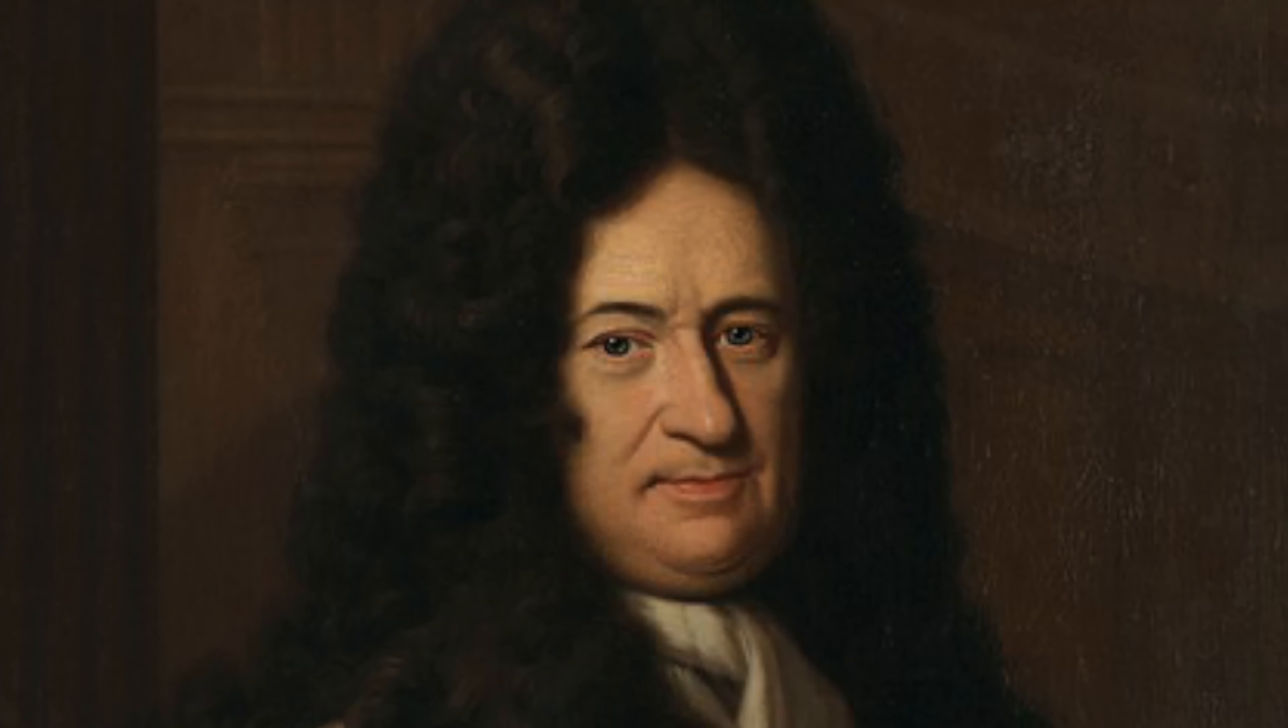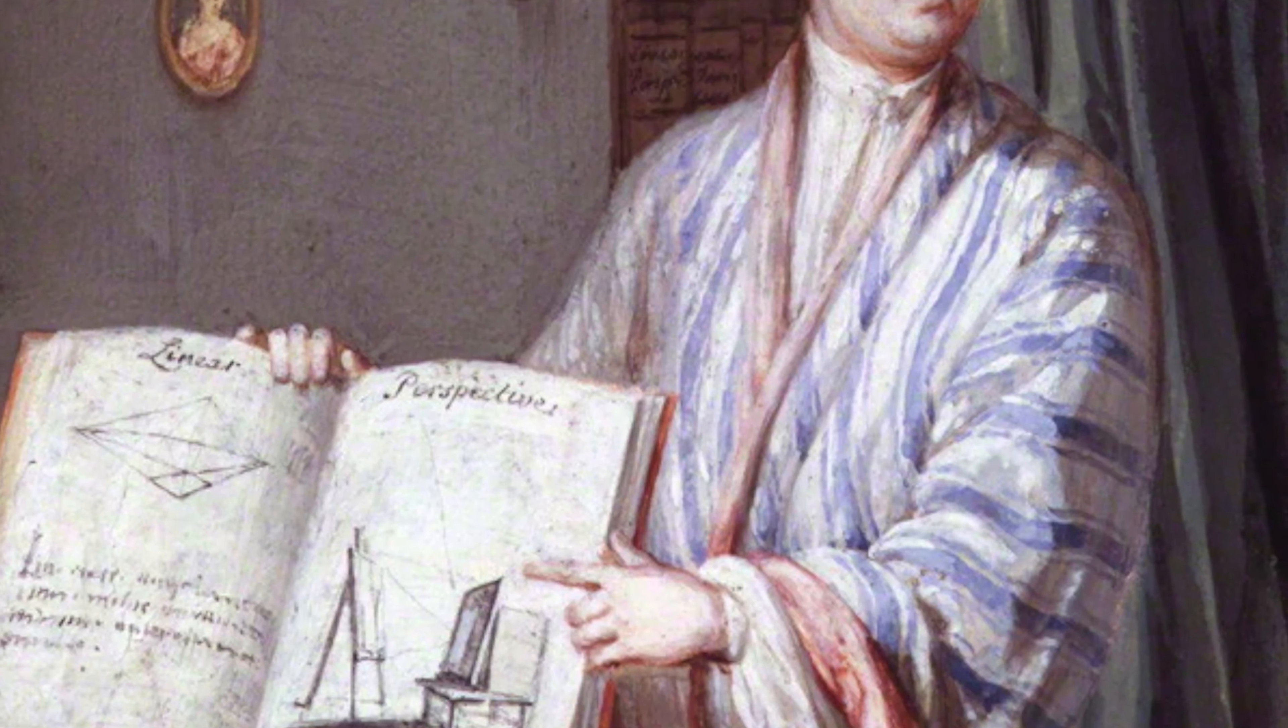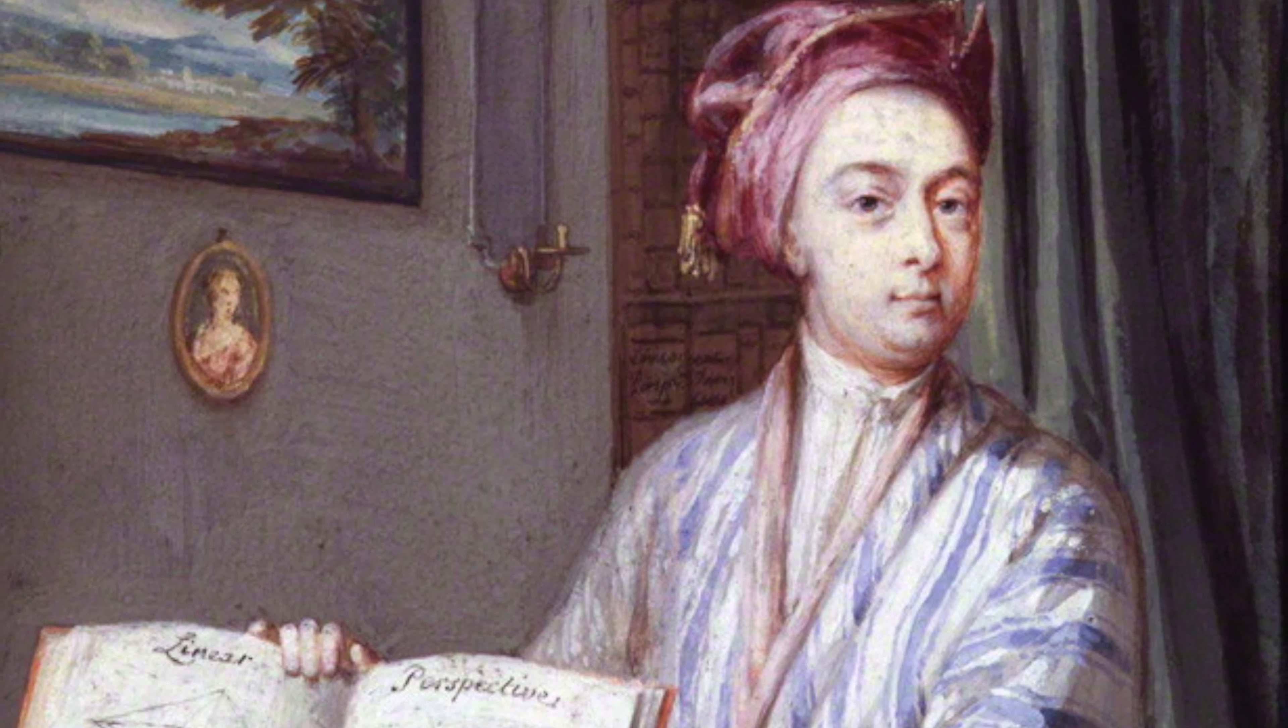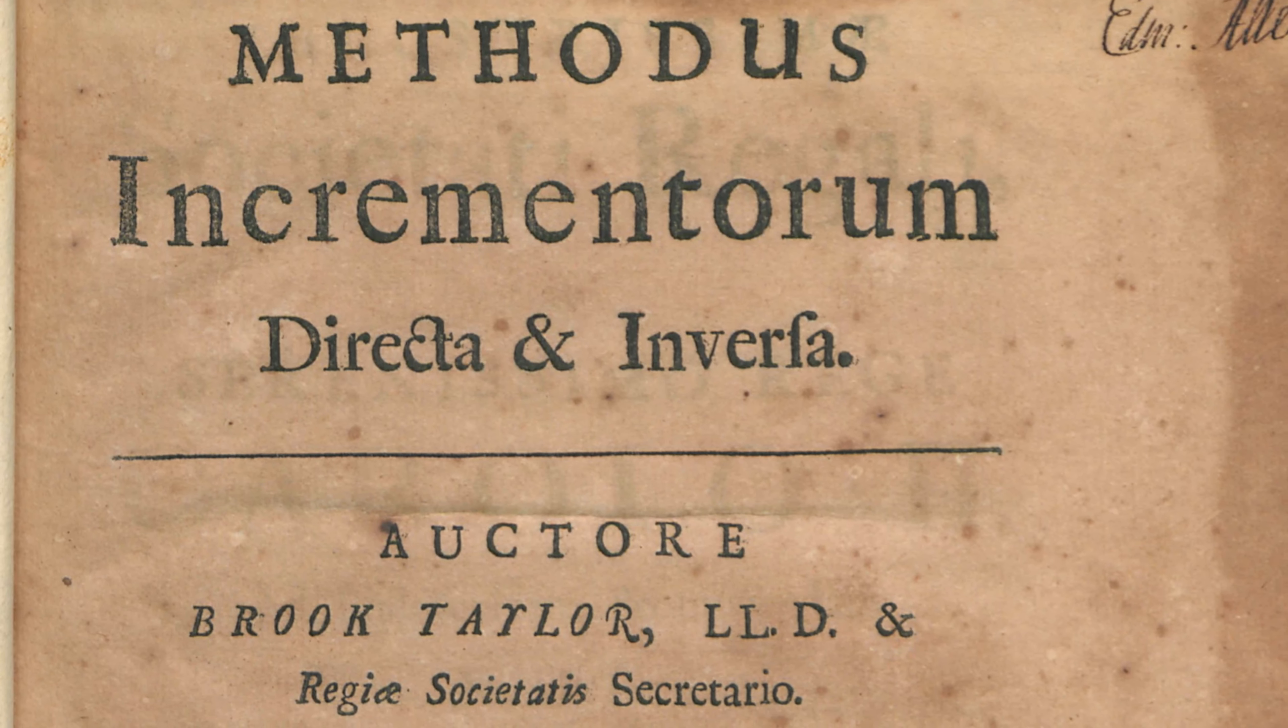After all, together with Jacob, he had done so much for the development, application and dissemination of Leibniz calculus that its inventor praised the two brothers almost as co-inventors. Johann, incidentally, took one characteristic step further, suggesting that he had independently discovered and developed integral calculus. Johann also disliked the secretary of the Royal Society, Brooke Taylor, because he considered the Taylor series his discovery. In fact, Johann had already published the essence of the series in 1694, but Taylor failed to cite him in his book.